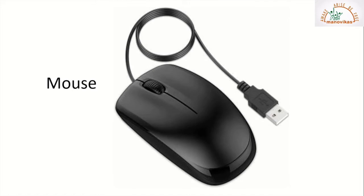Now we have a mouse. Mouse is also called a pointing device. This device is also most widely used. We use mouse to point and select things on the computer. A mouse is made up of two buttons: the left button and the right button. And what is the small thing in the center? This is a scroll wheel. We also have a USB port — we connect the mouse using a USB port.